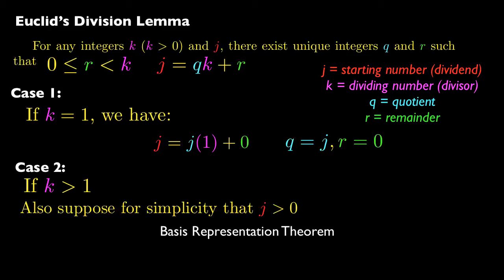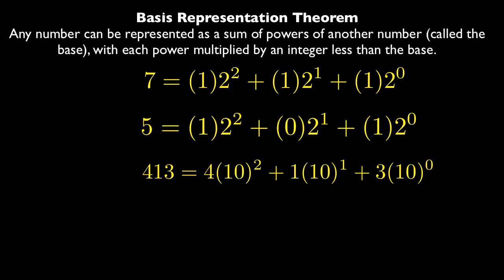And in order to do this particular proof, we're going to use what's called the basis representation theorem. Which basically says that a number, any number, can be represented as a sum of powers of another number. And that's called the base. With each power multiplied by some integer that's less than the base.